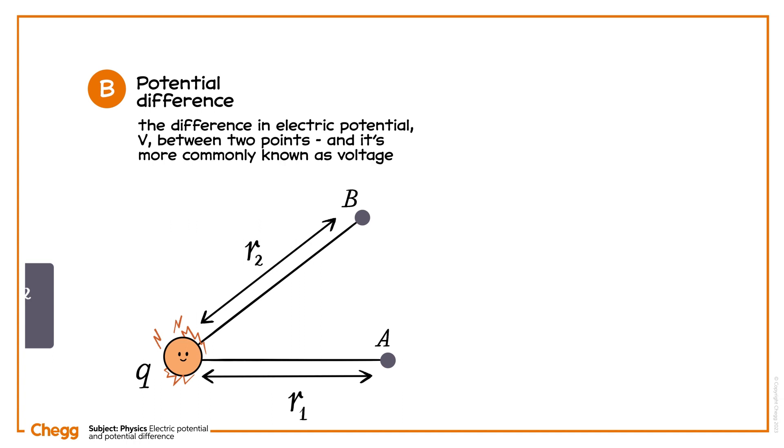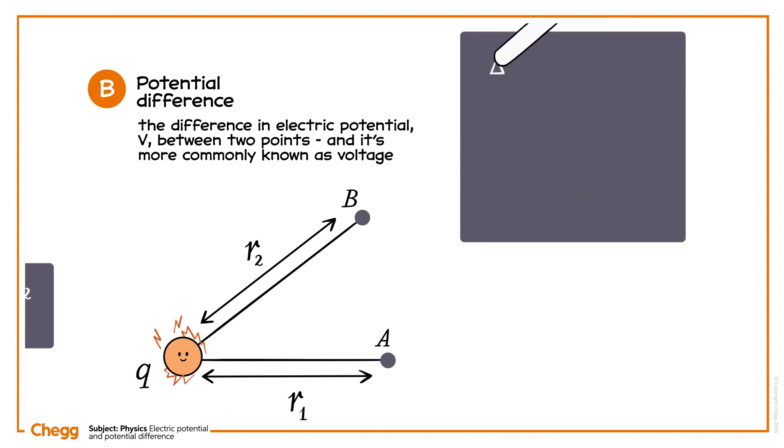we first need to calculate the electric potential at each point, then find the difference. The potential difference equals vb minus va, which is equivalent to k times q over r2 minus k times q over r1.